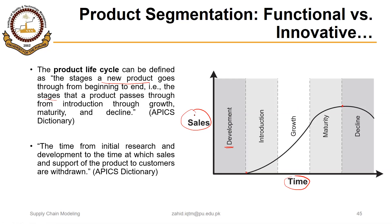Every product follows this curve; the only difference is the timeframe. A product could have a life cycle of two decades, while another might last only one year or less. The shape of the curve is similar but the duration varies significantly — life cycle is long for functional products and short for innovative products.